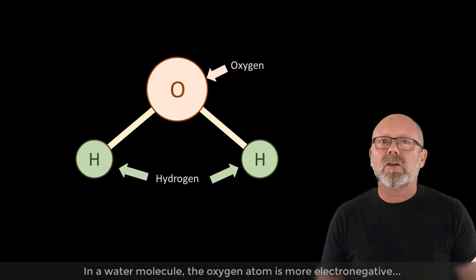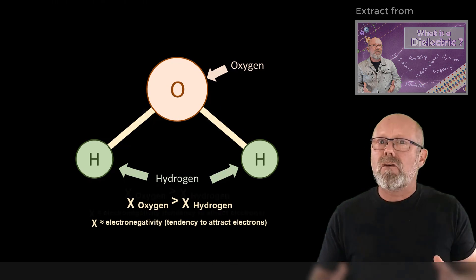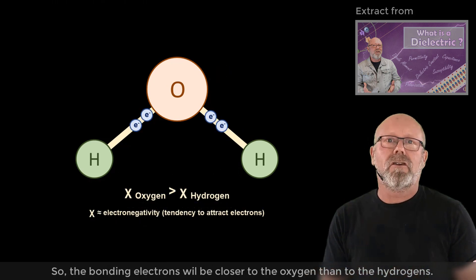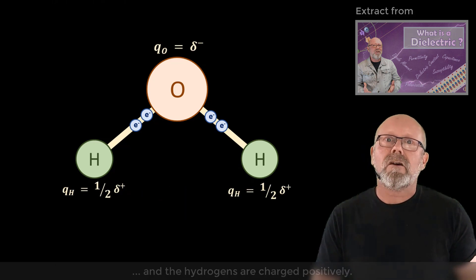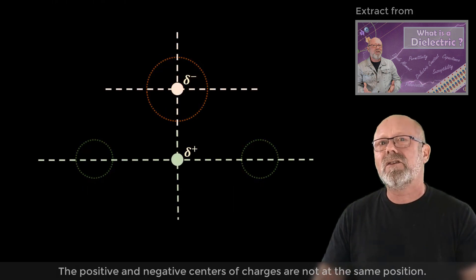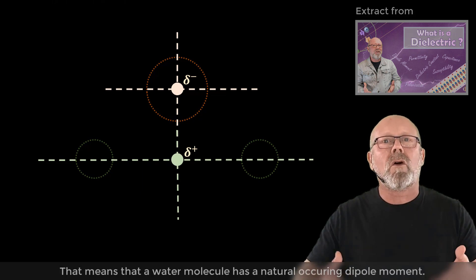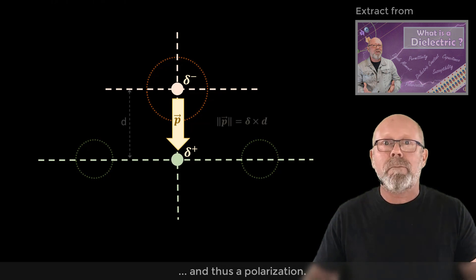In a water molecule, the oxygen atom is more electronegative than the hydrogen atoms. So the bonding electrons will be closer to the oxygen than to the hydrogens. Consequently, the oxygen is charged negatively, and the hydrogens are charged positively. The positive and negative centers of charges are not at the same position. That means that a water molecule has a naturally occurring dipole moment, and thus a polarization.